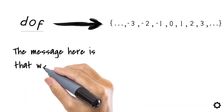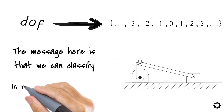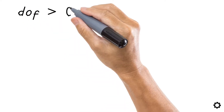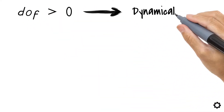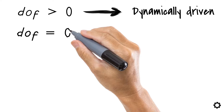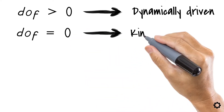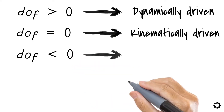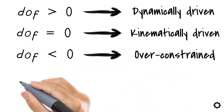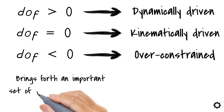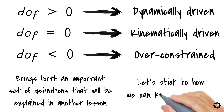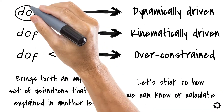We can classify our mechanism in terms of the number of resultant degrees of freedom. If our system has a positive number of degrees of freedom, larger than 0, we say that we have a dynamically driven system. If it is 0, we say that the system is kinematically driven. And if it is less than 0, we are in the presence of an over-constrained system. This brings forth an important set of definitions that will be explained in another lesson.